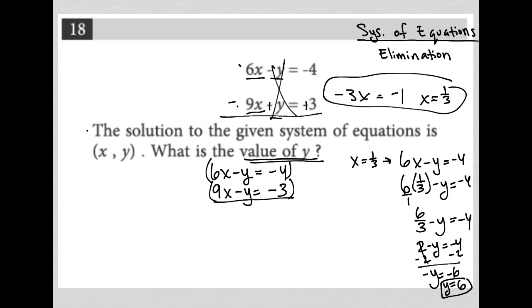To do that, I'm looking at 6x here, I'm looking at 9x there. The lowest common multiple, the smallest number that both 6 and 9 evenly go into, is 18. So if I multiply the top by positive 3 and multiply the bottom by negative 2, what I end up with is 18x minus 3y equals negative 12. That's just distributing the 3 across. And then for the bottom equation, I'd have negative 18x plus 2y equals positive 6. That's just distributing the negative 2 across.